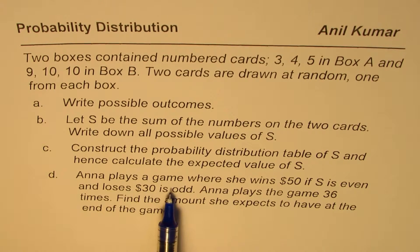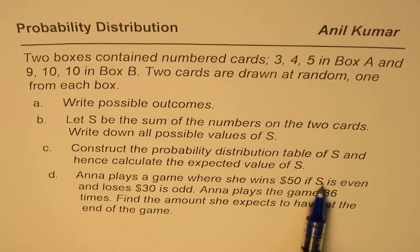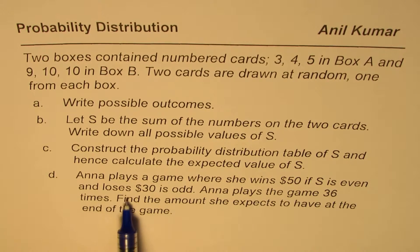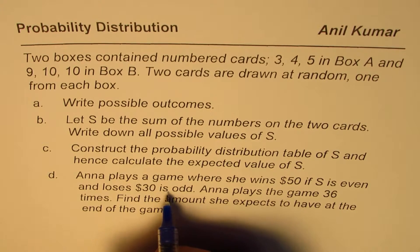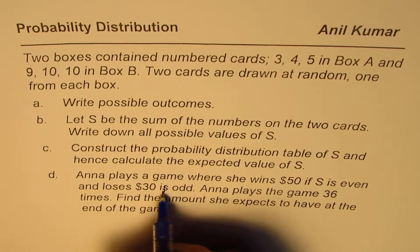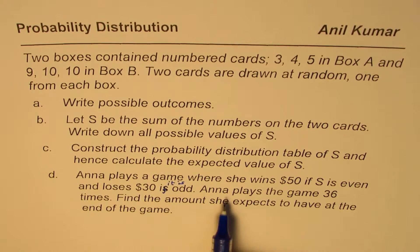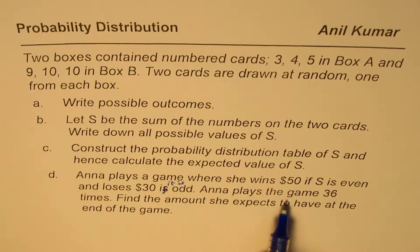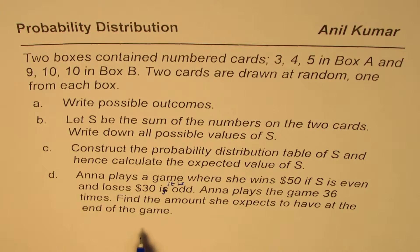Anna plays a game where she wins $1.50 if S is even and loses $1.30 if S is odd. Anna plays the game 36 times. Find the amount she expects to have at the end of the game.